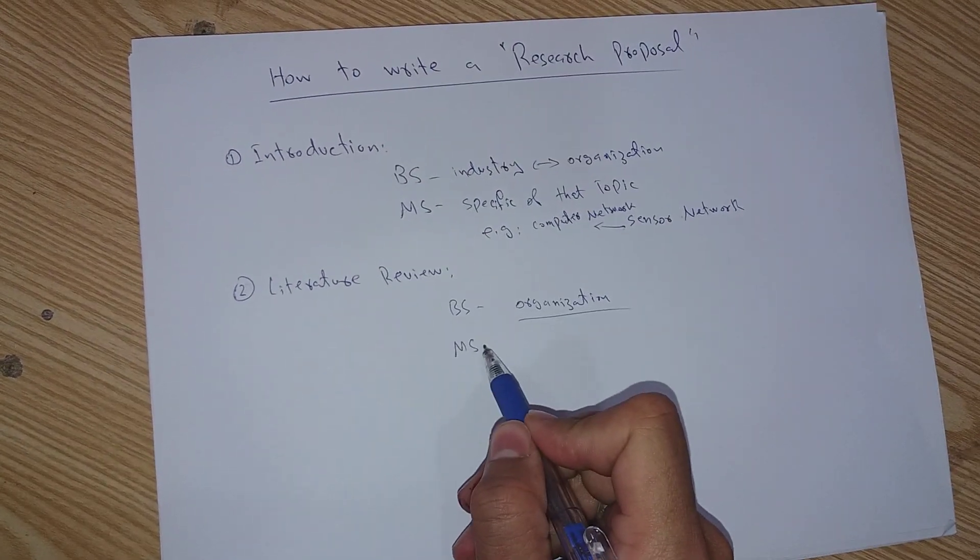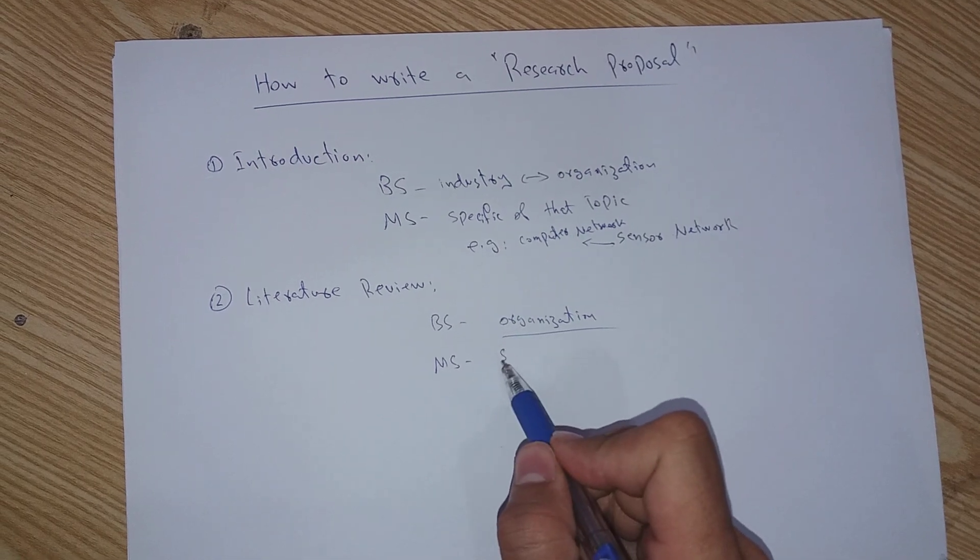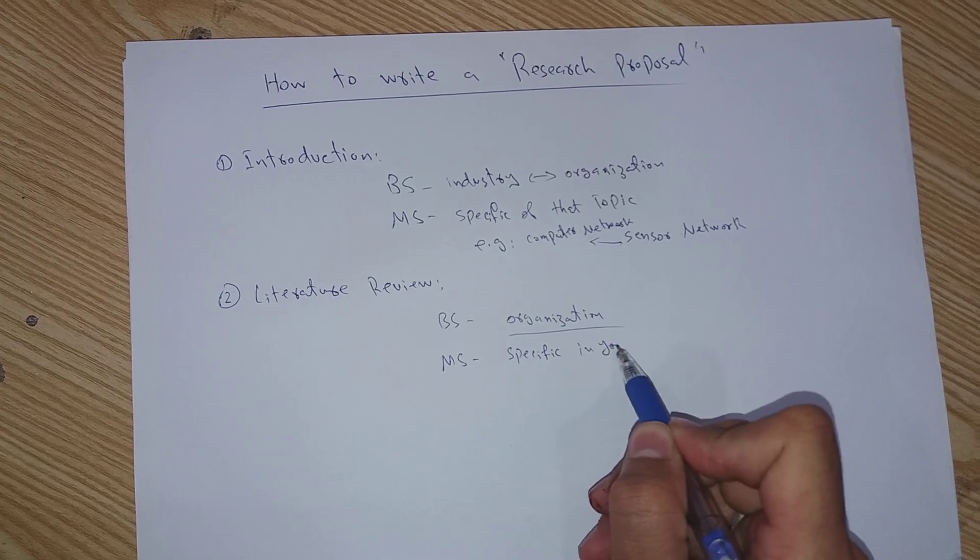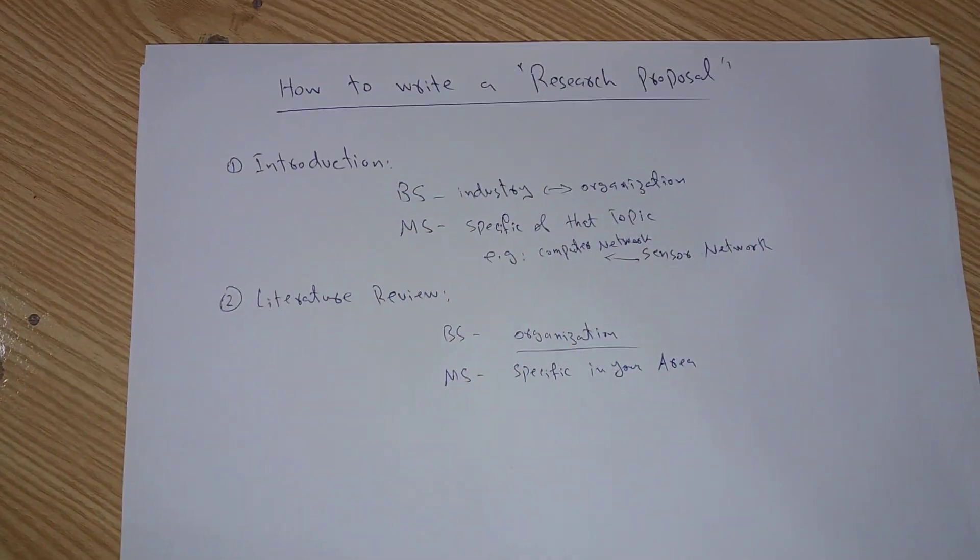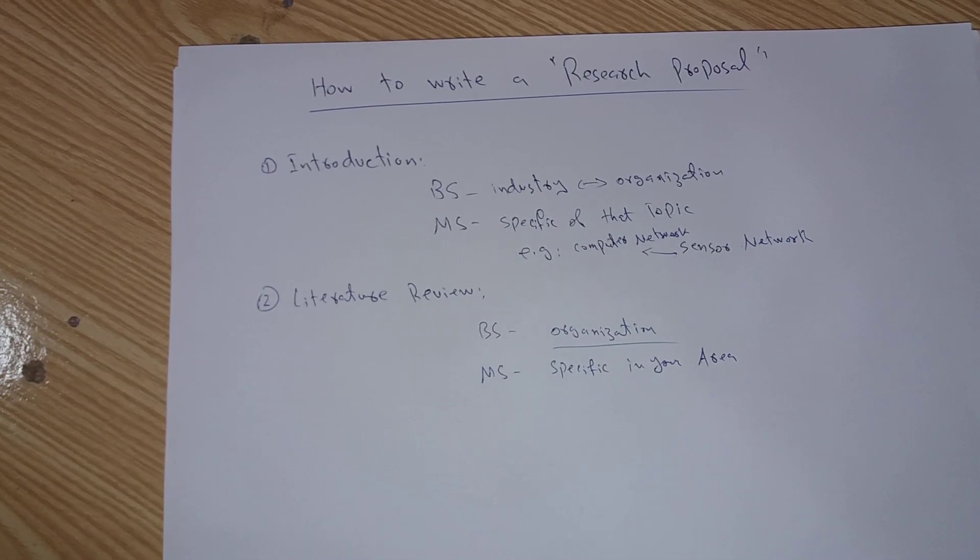Similarly, if you are writing a proposal for MS level, you have to be specific in your area. For example, if I am writing a proposal for routing protocol, those kind of routing protocols may have been developed before.